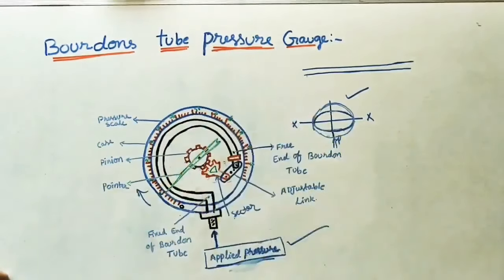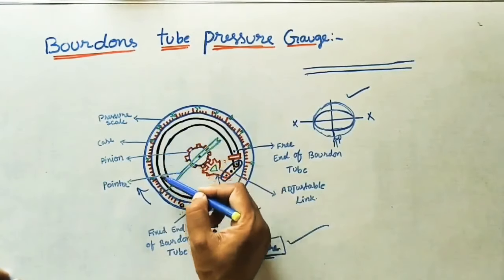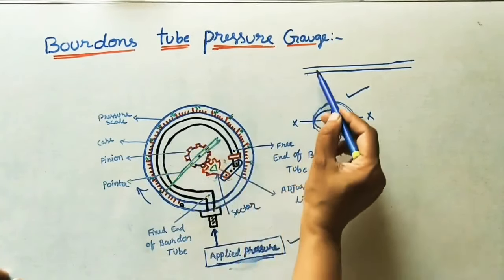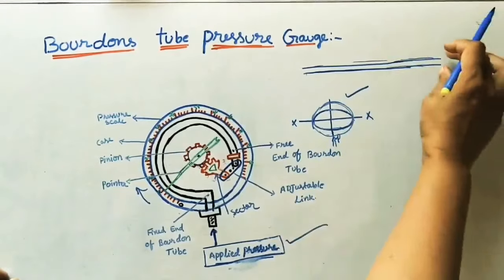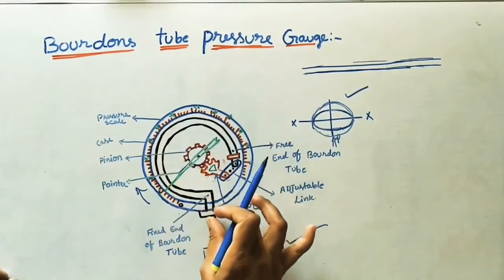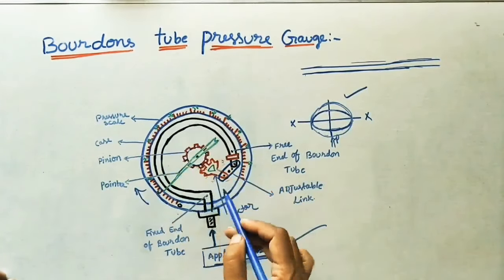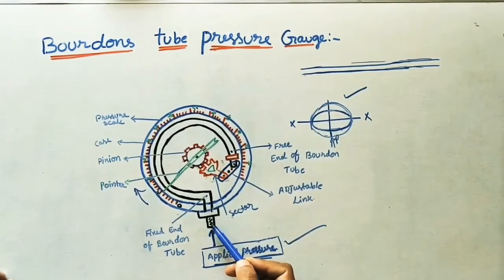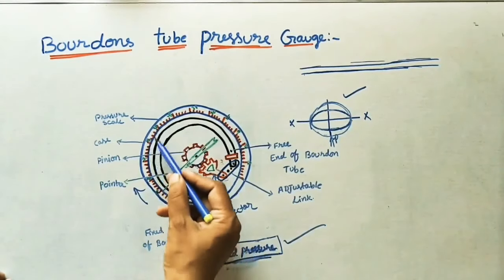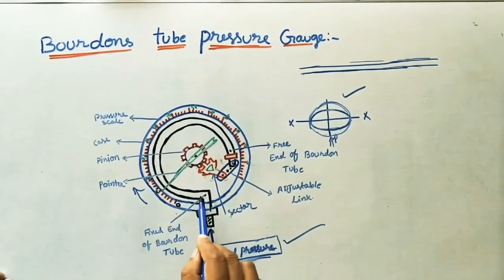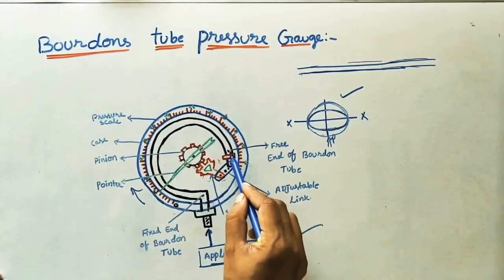The important parts of the Bourdon tube pressure gauge are: first, the Bourdon tube — the circular one shown here. Actually it is in a linear or lengthy pipe form; we fix this tube in a circular way inside a metallic case. The Bourdon tube has two ends — one end is open, where we can send the gas inside, and the other end is fixed to the case.